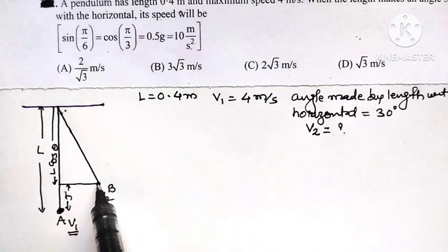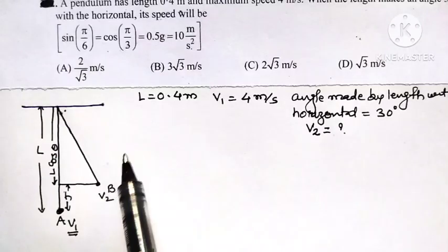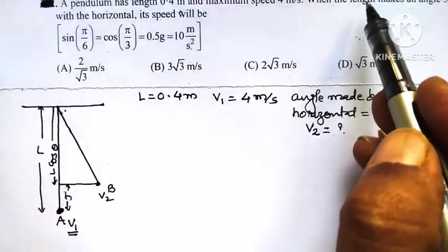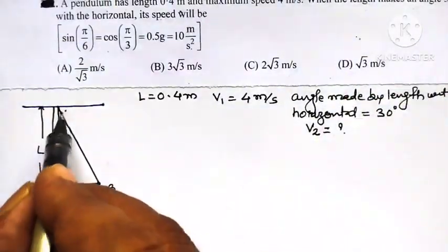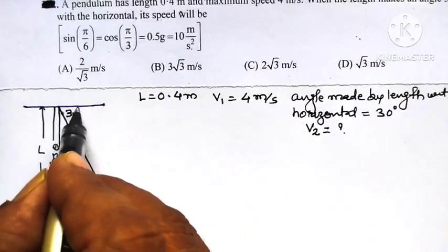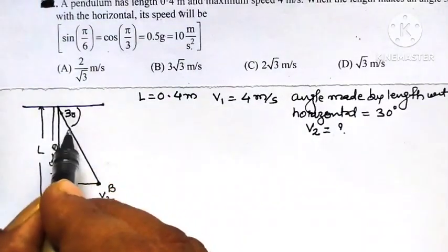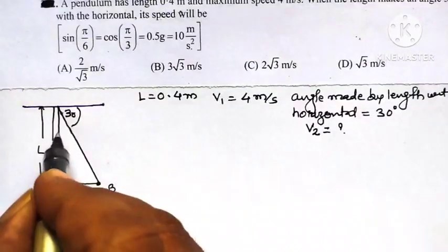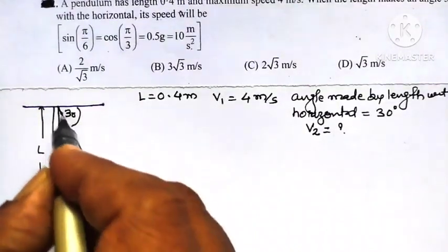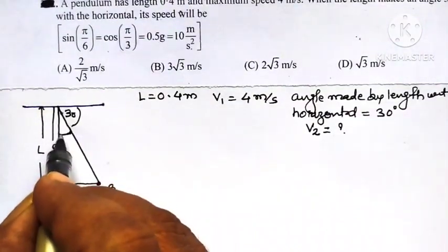When that pendulum is somewhere at position B, it possesses both kinetic energy and potential energy. In the present problem, the length of pendulum makes an angle of 30 degrees with the horizontal. What is the angle made by length of pendulum with vertical? It is 60 degrees.